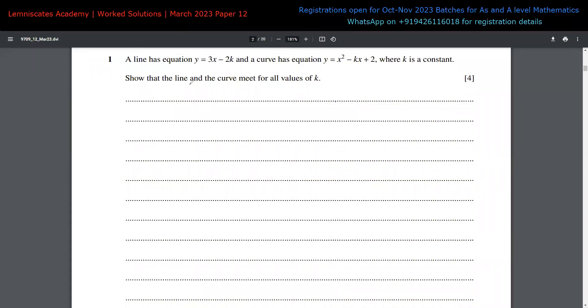All right, let us begin with the first equation. Here we are having an equation of a line and an equation of a curve where in both equations, k is acting like a constant. In the first equation, here is the value of k. In the second equation, here is the k. So in both of them, k is acting like a constant. And we have to show that this line and this curve are meeting for all values of k.